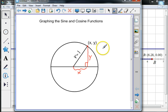Now in a right triangle, the sine of an angle theta, which is this angle right here, is equal to the opposite side over the hypotenuse, which on our unit circle is y over 1. So the sine of theta is the y-coordinate of this point on the circle.